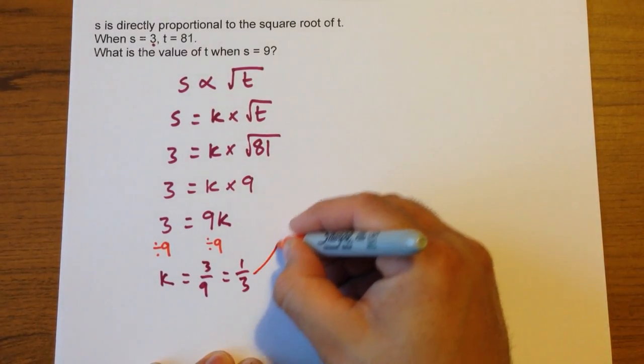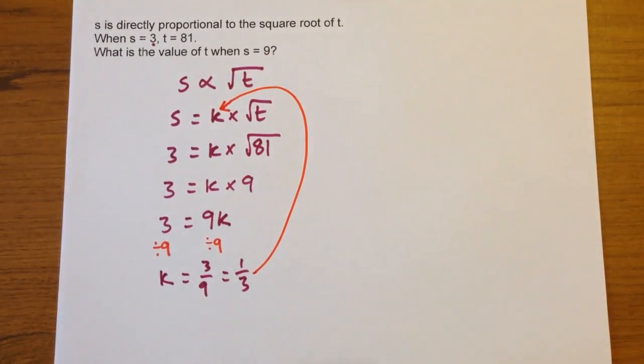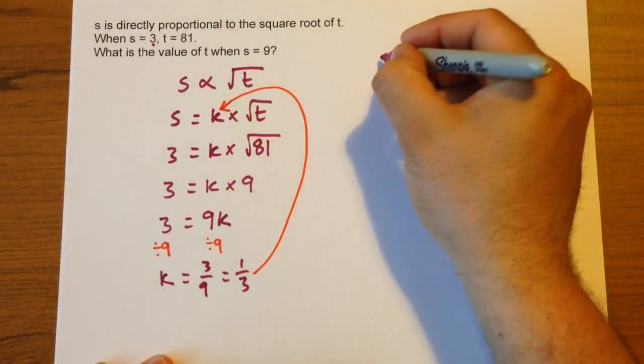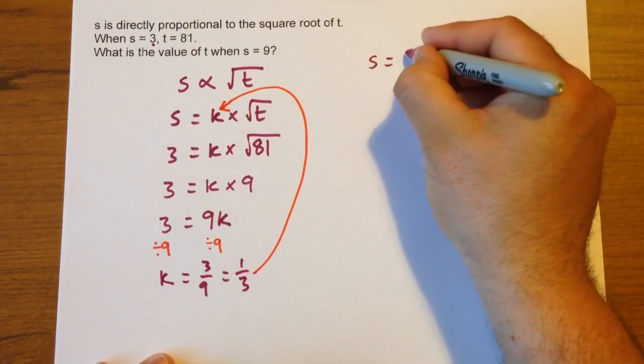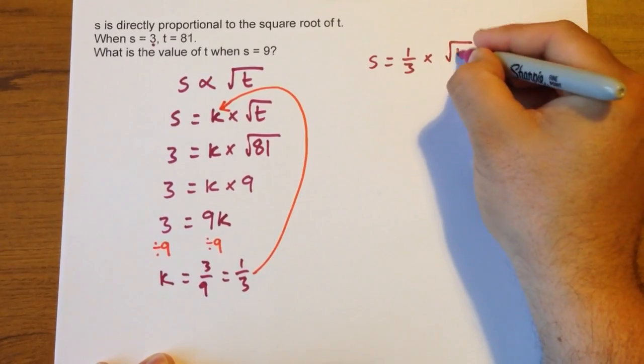Now, we're going to take this value and we're going to put it back in place of that k, because we know what k is now.